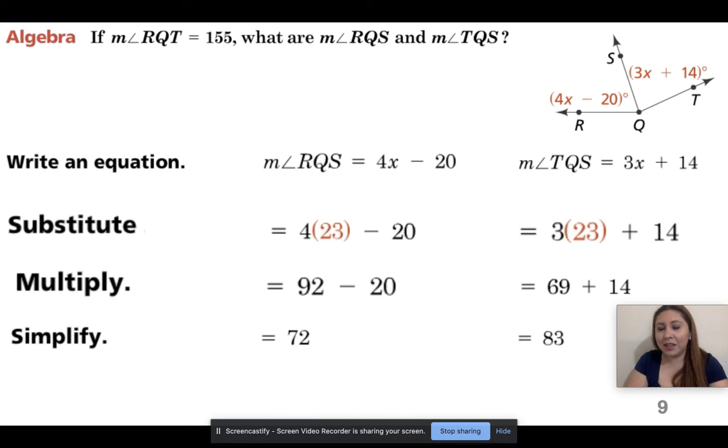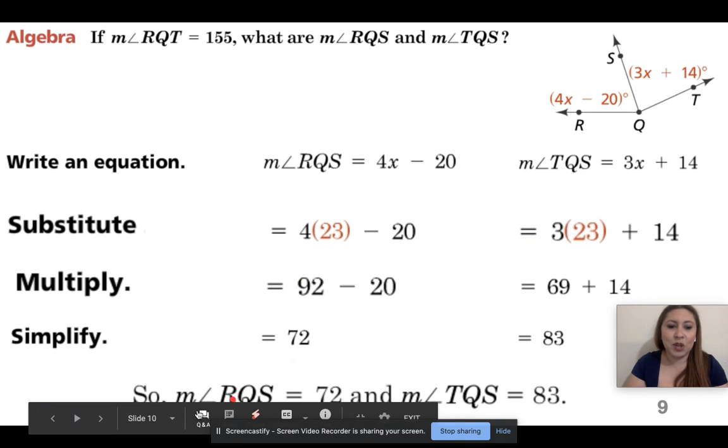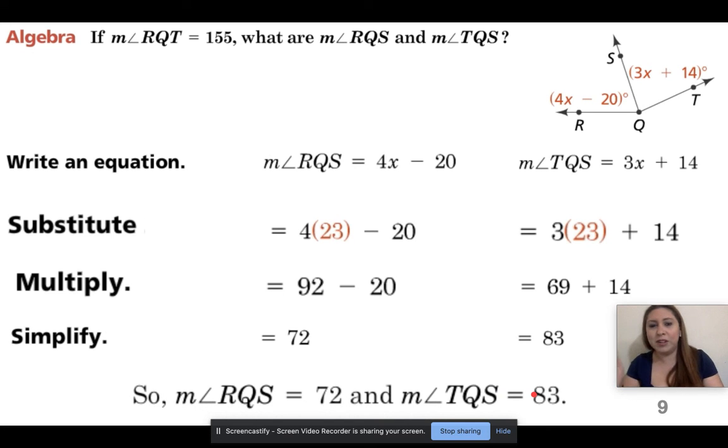So 3x, remember x was 23. So 3 times 23 is 69, plus 14 is 83. All right, there we go. So we found what we were looking for. So the measure of angle RQS equals 72, and the measure of TQS equals 83. All right, finally, that took forever, sorry I was goofing around, but we finally did it.